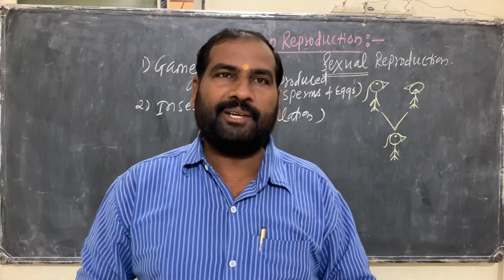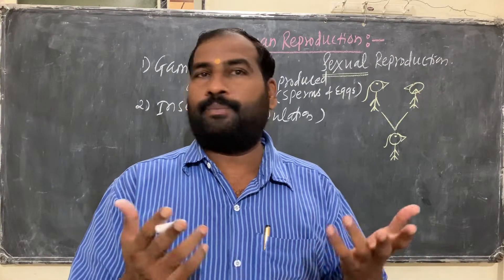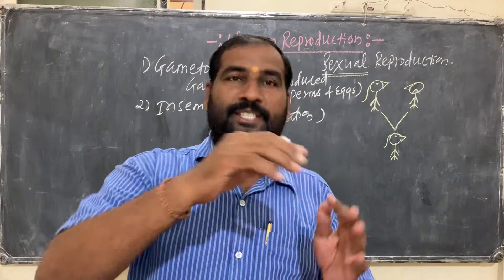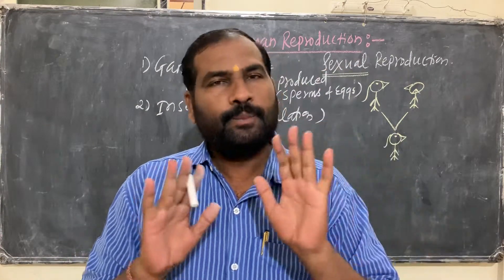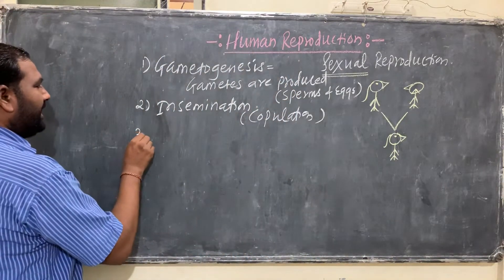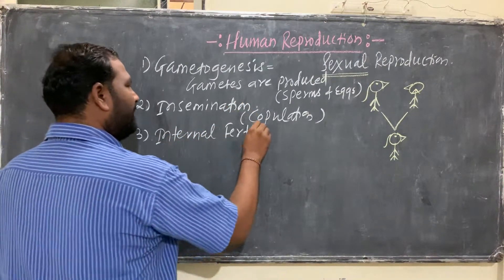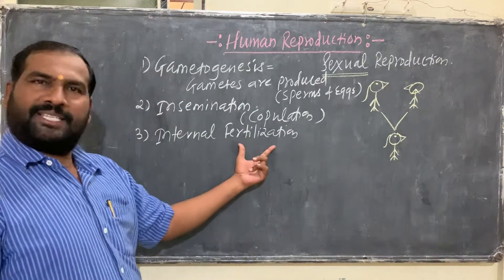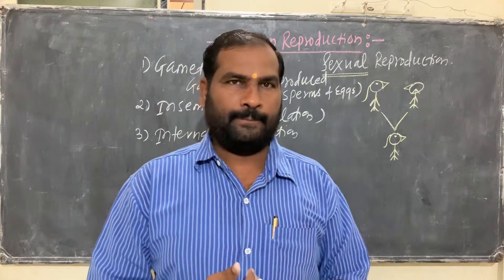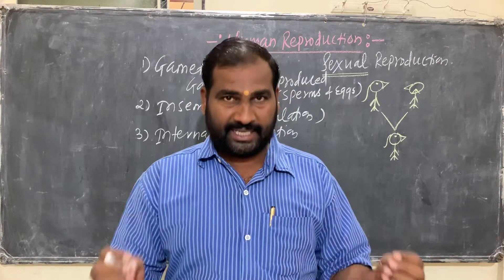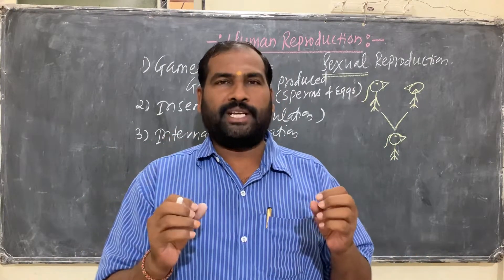Because sexes are separate, male gametes are present in the male individual and female gametes are present in the female individual, so there must be fertilization. Fertilization is the union of male gametes with female gametes, so male gametes must reach the female gametes — that is why insemination is very important. The third step is internal fertilization, which means the union of male gametes with female gametes takes place inside the body.